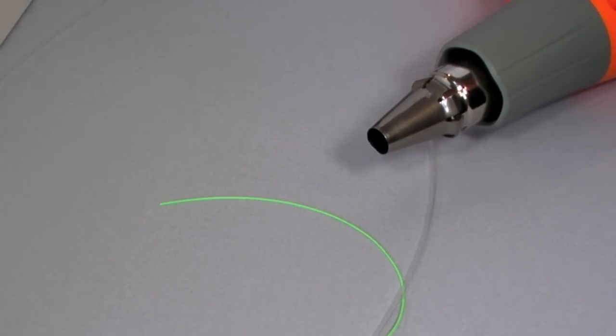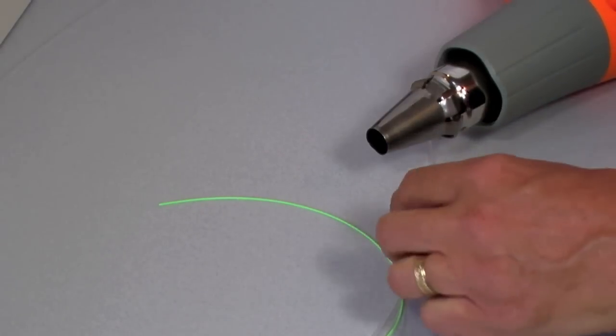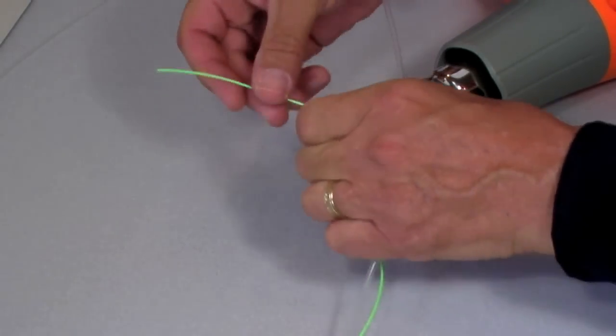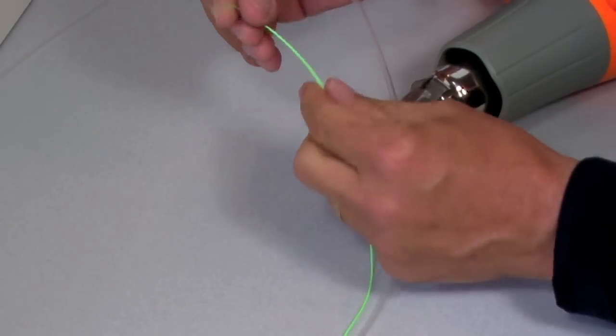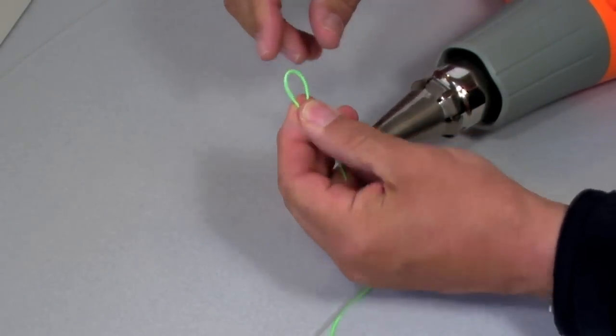Hello, this is Peter Charles and welcome to my video on how to weld a loop. What we're going to do today is take this little piece of running line, fold it back, and make a loop.